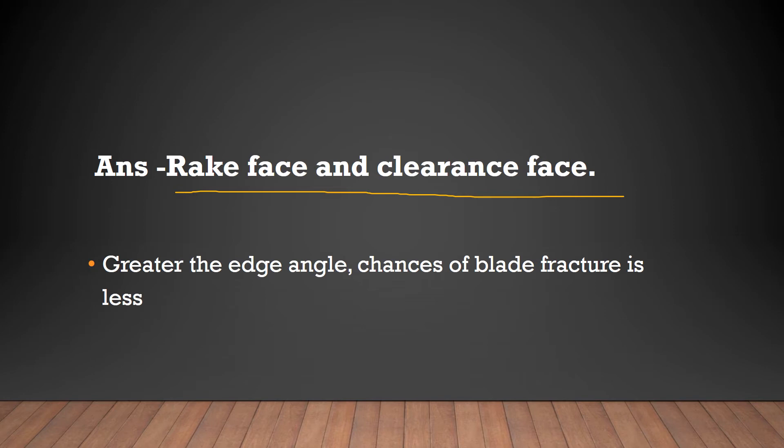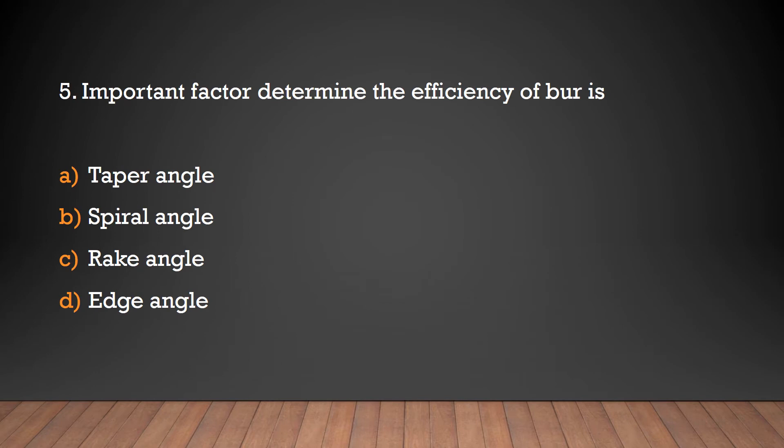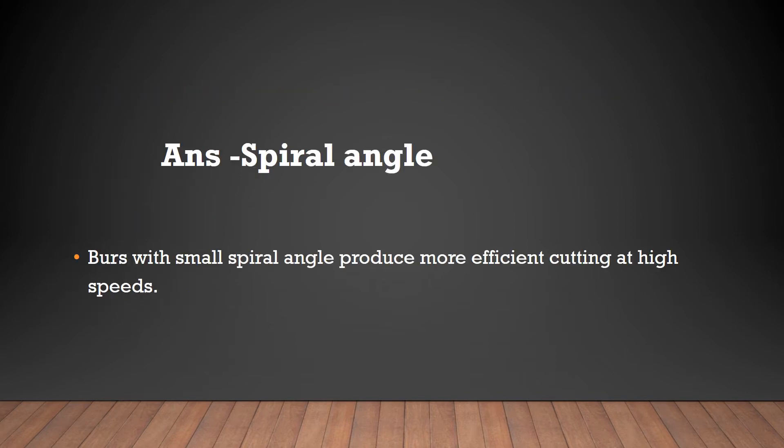Greater the edge angle, the less the chances of blade fracture. Question 5: Important factor that determines the efficiency of bur is taper angle, spiral angle, rake angle, or edge angle? Answer: spiral angle. Small spiral angle produces more efficient cutting at high speeds.